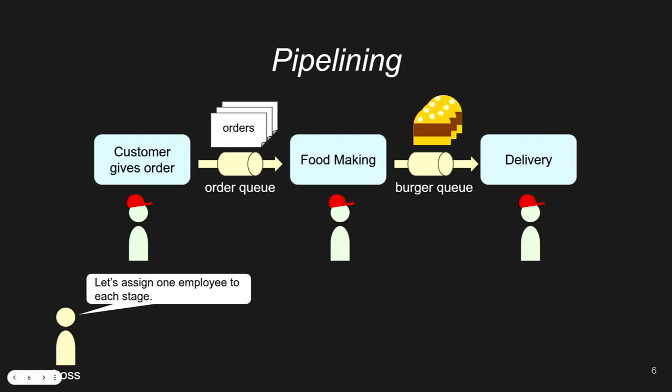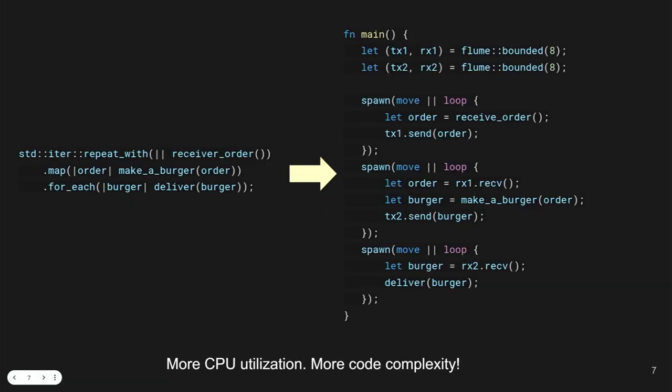If a shop only has one employee, let's be a better boss — assign one employee to each stage. Then everyone can work simultaneously. As soon as a customer places an order, it goes straight to the next person. Can we simultaneously have someone handling customers, someone cooking, someone handling garnishes, someone running the floor? Customer satisfaction would be much higher. In Rust, let me show the traditional way to write this before introducing my framework.